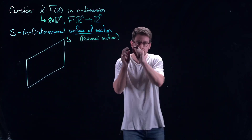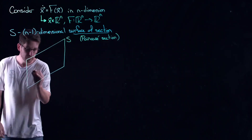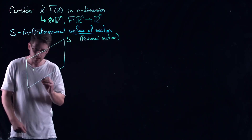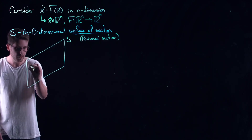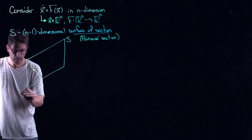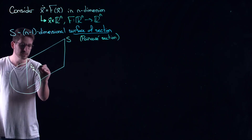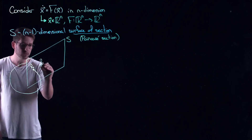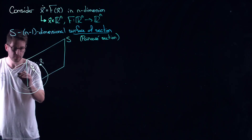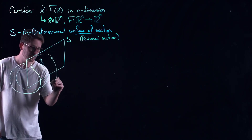The basic idea is this: in my n-dimensional phase space, we think about trajectories as parametric curves that move and wind throughout space. If I started in the section at x0, I would fly out of the section, go around and do something weird, come back around, and pierce the section again — I call this next point x1. Then I go out, go around, come through, pierce the section again.